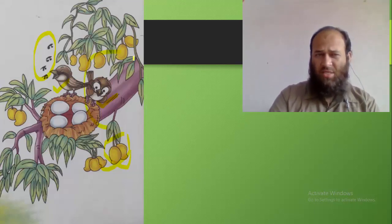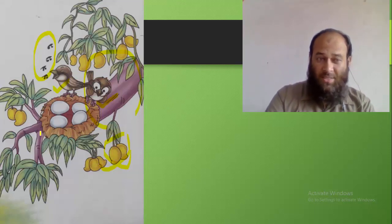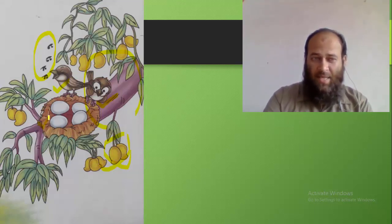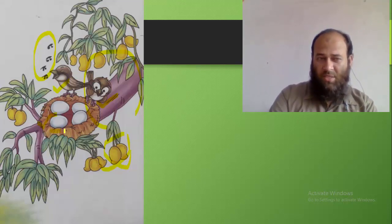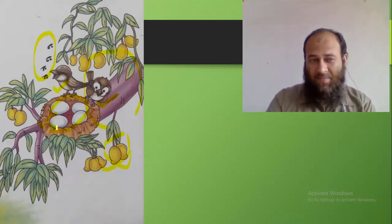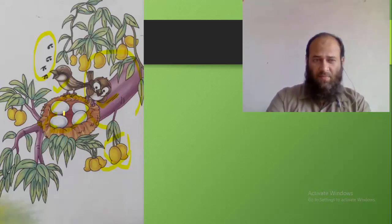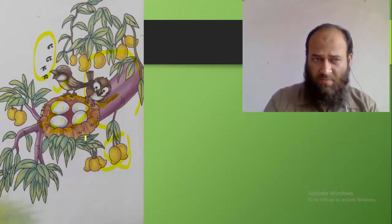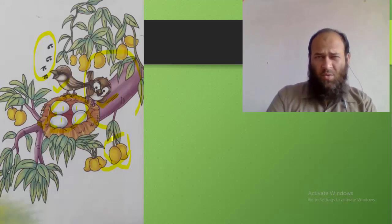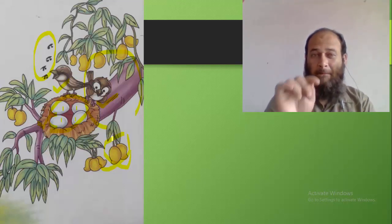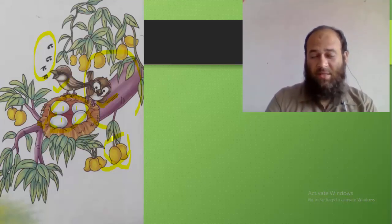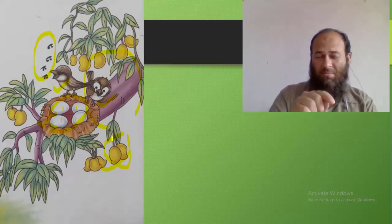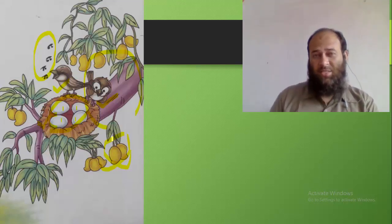What else do you see here on this mango tree? We see a nest. And what do we see here? Eggs. How many eggs are there? One, two, three and four. Can you also count the number of mangoes given here in this picture? Count the mangoes and send me the answer.